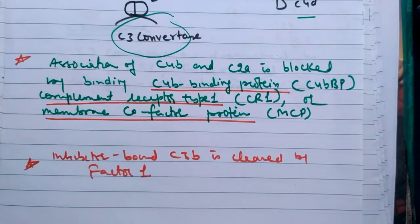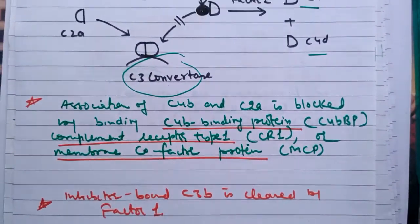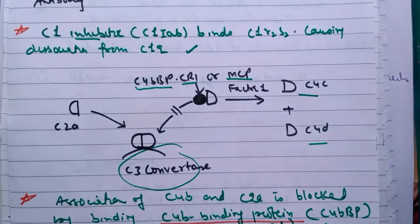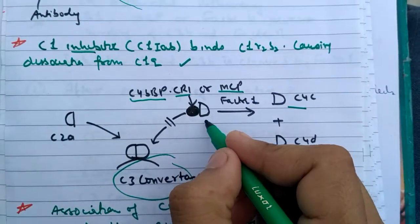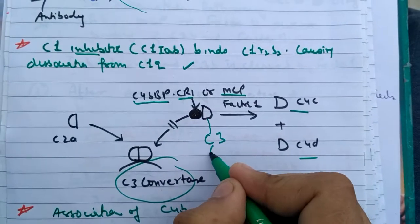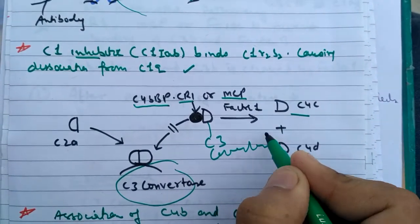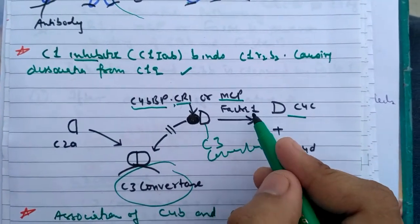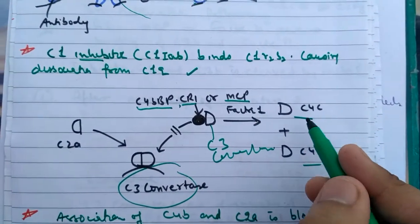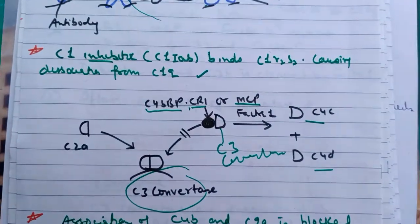Inhibitor-bound C3B is cleaved by factor 1. So factor 1 cleaves them from the inhibitor. So this is the inhibitor joining with the C3. This is C3 convertase and this is inhibitor protein inhibiting its activity, and factor 1 further cleaving C3 convertase.